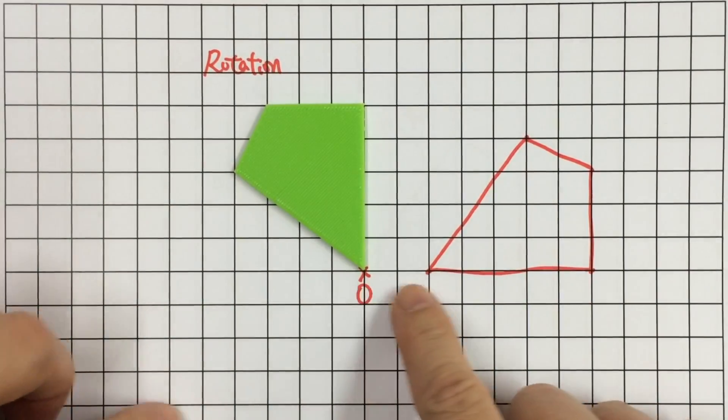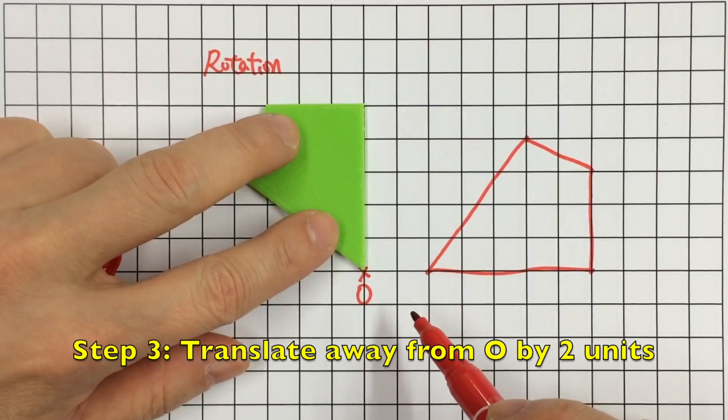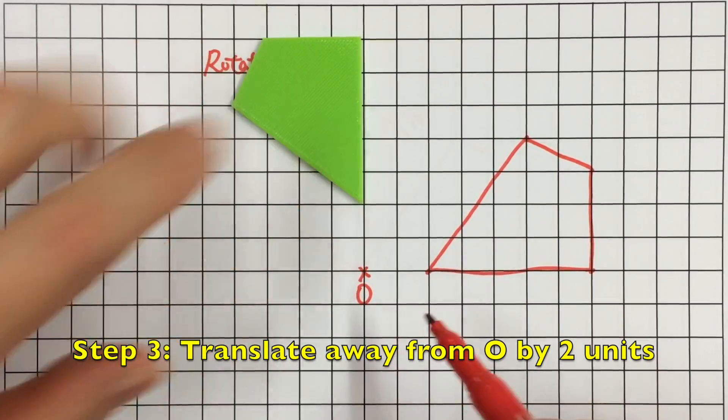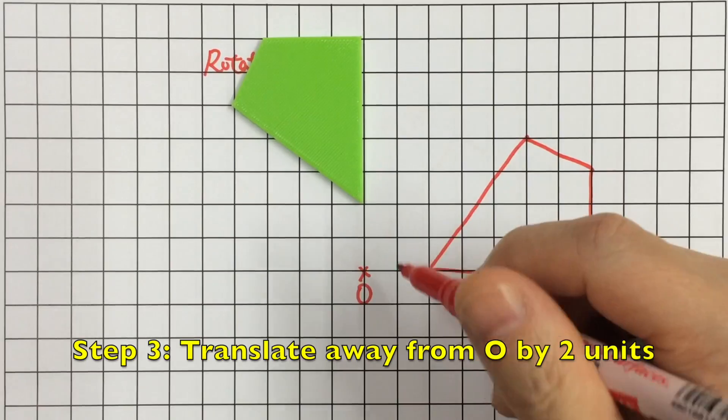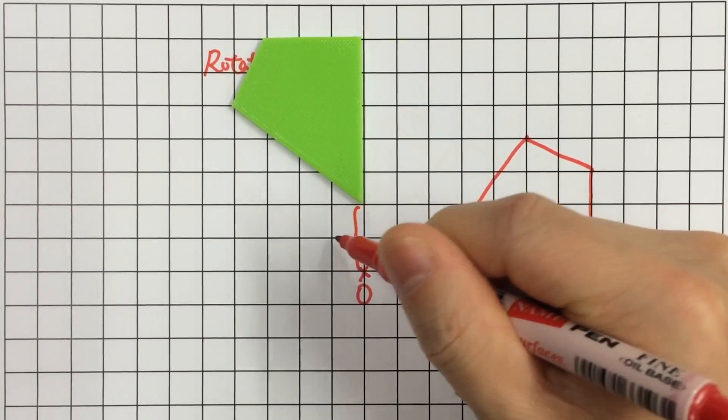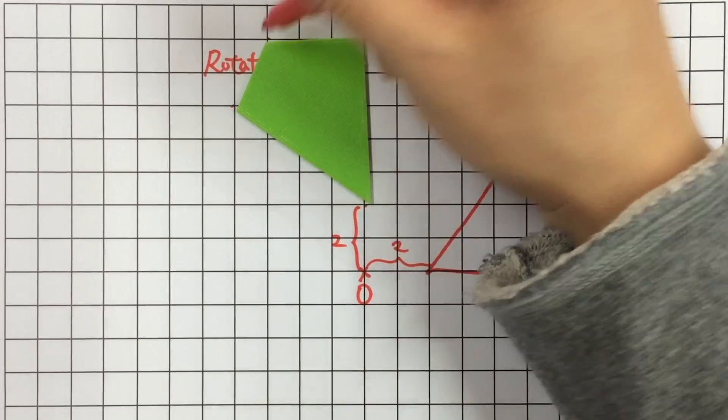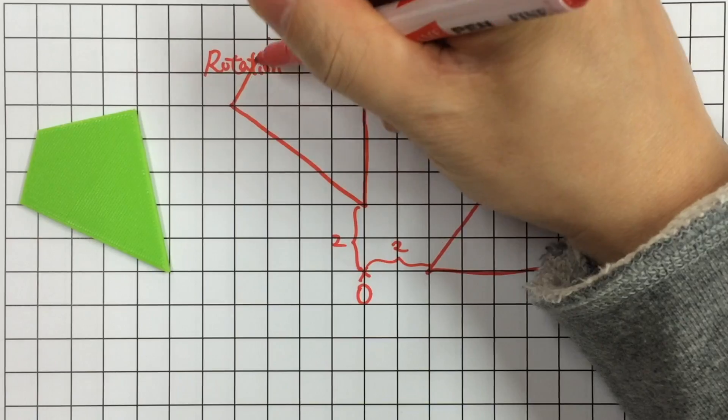And finally, we have to reverse the process of translation. This time we move the vertex away from O. So of course, this is two units. This again is two units. And then finally, the object is right here.